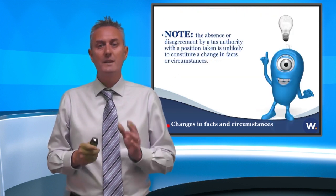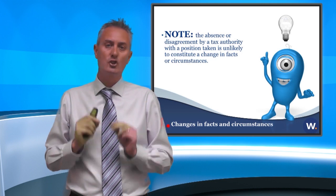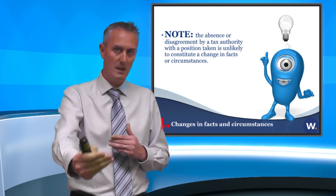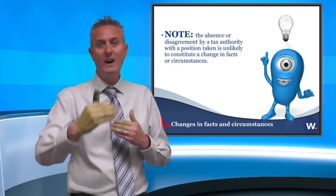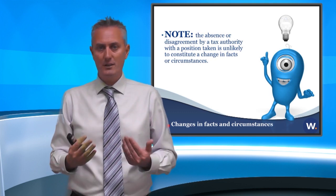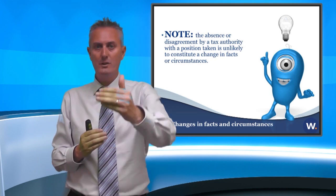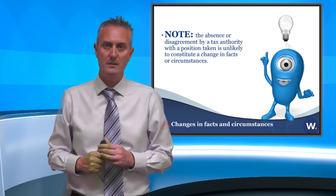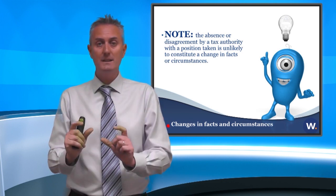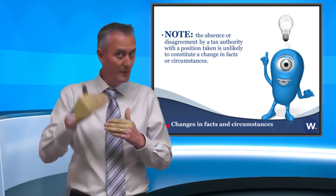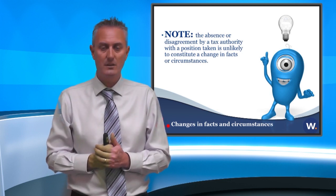Every year you would need to look at that change in assessment and say: has my number or the probable number that I looked at changed? This is an ongoing thing until the tax expires. One thing they have said: a change in facts and circumstances is not just the passing of time. So, assuming the tax authorities have five years to investigate, you cannot say moving from year two to year three to year four is a change in circumstance. Providing they have the ability to do an investigation in every year, that wouldn't be a change in fact and circumstance — you need something else to point at.